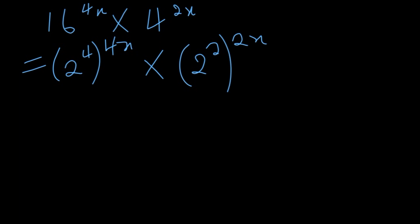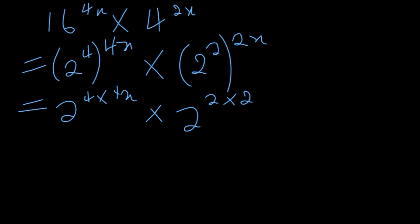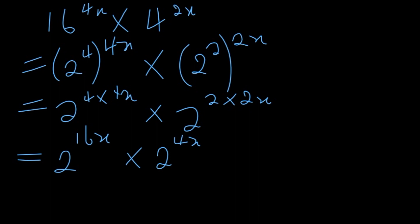Before we add the exponents, we have exponents raised to other exponents. According to the law of exponents, when you raise an exponent to another exponent you multiply the indices. So that will be 2 to the power of 4 multiplied by 4x, multiplied by 2 to the power of 2 times 2x. This gives us 2 to the power of 16x multiplied by 2 to the power of 4x. Now the bases are the same, so we add the exponents: 16x plus 4x gives us 2 to the power of 20x.